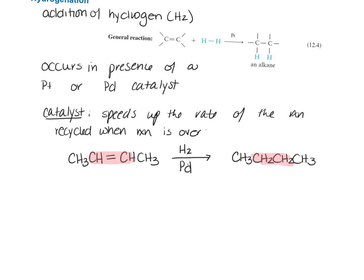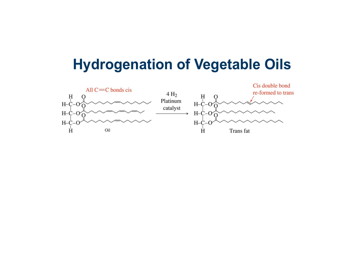The hydrogenation of vegetable oils is a really important commercial process. Vegetable oils like soybean or cottonseed oil are composed of long organic chain molecules that contain these alkene bonds. The high degree of unsaturation — the number of double bonds — gives rise to the term 'polyunsaturated,' like when we think about unsaturated fats.